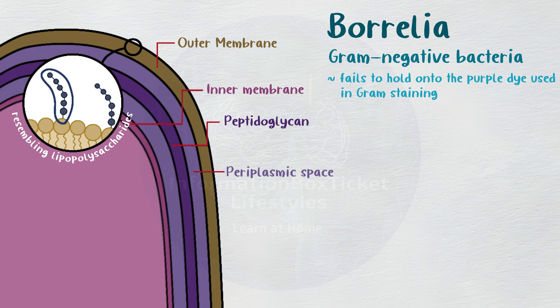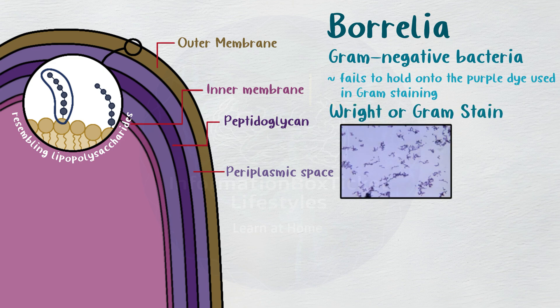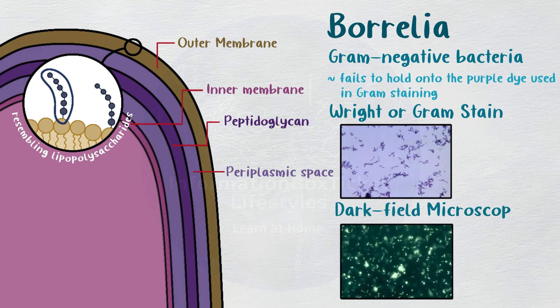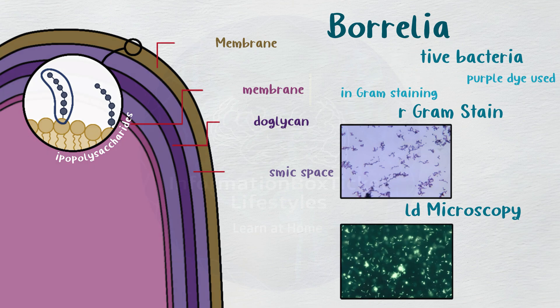However, gram staining makes it difficult to see them. Rather, the Wright or Giemsa stain, which gives the bacteria a purple appearance, and dark-field microscopy, which shows the bacteria as white against a dark backdrop, are the best ways to observe them.